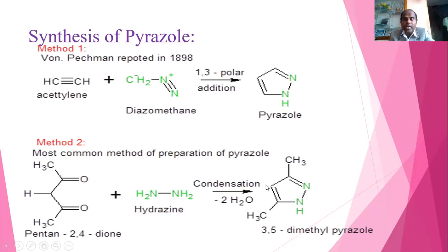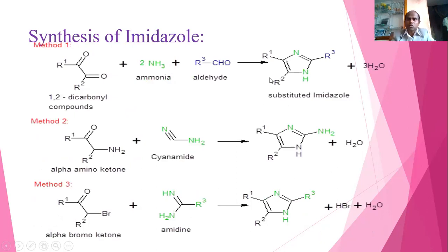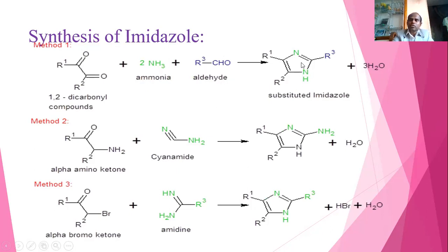Imidazole is a 5-membered ring with nitrogens at the first and third positions. In the first method, a 1,2-dicarbonyl compound is treated with ammonia in the presence of an aldehyde, giving rise to substituted imidazole. In the second method, an alpha-amino ketone is treated with cyanamide to give imidazole.